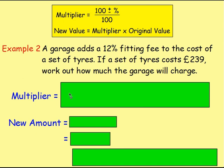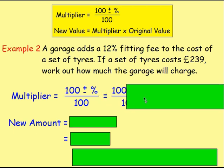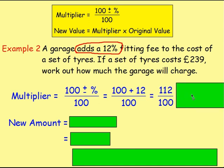The way you use multipliers is you always start at 100, then add or subtract your percentage, then divide by 100. Here we're starting at 100. Would you add or subtract? Add — because it says they add a 12% fitting fee, so you're going to be paying more than just the cost of the tyres. So you do 100 add 12, divide by 100. Just do this without a calculator: 100 add 12 is 112, divide that by 100 and you get 1.12.